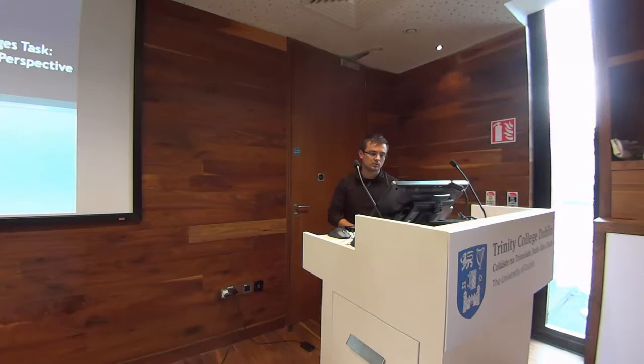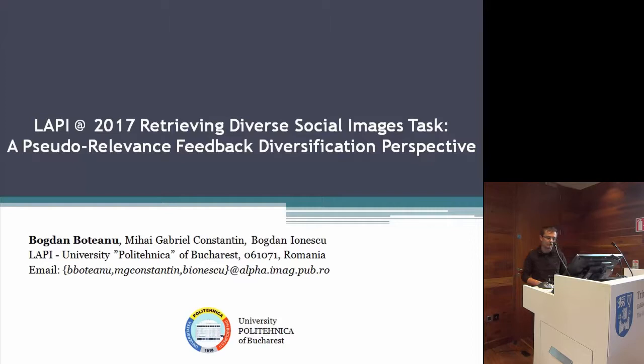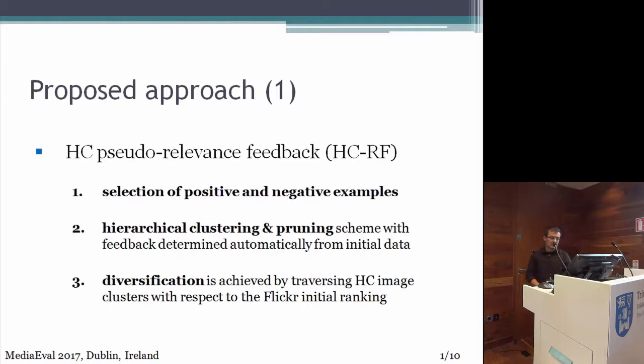I will present our approach to the diversification task, which consists of absolute relevance feedback from a diversification perspective. It is based on three main steps. First of all, we select the positive and negative examples.